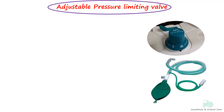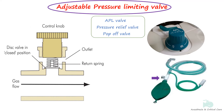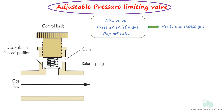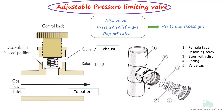The adjustable pressure limiting valve, also called APL valve, expiratory valve, pressure relief valve, or pop-off valve, are spring-loaded devices that vent out gases when excess pressure builds up. They typically have three ports: the inlet, which brings in fresh gas flow; the patient port, which takes gas to the patient; and the exhaust port or outlet, which vents out excess gas to reduce pressure buildup. The individual components of such a valve are also shown here.